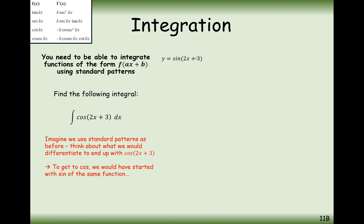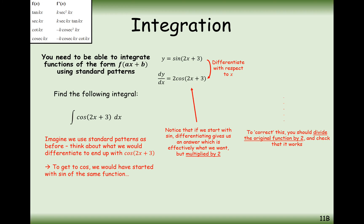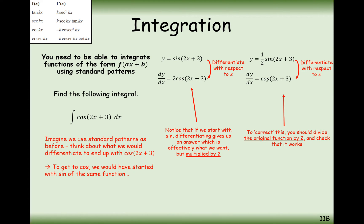If you remember y equals sine(2x + 3), then effectively using the chain rule, you differentiate the inside and then differentiate the outside function. So 2x plus 3 differentiates to 2 and sine differentiates to cos, and you still use the inside function there. So it's only the 2 that gets multiplied to the front.